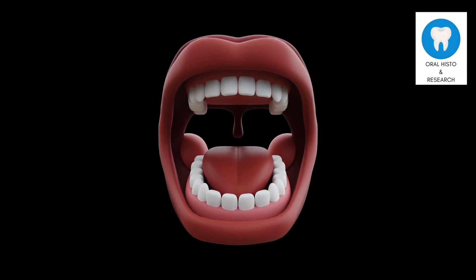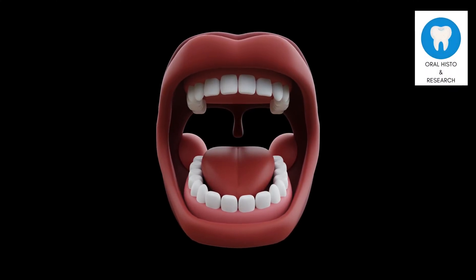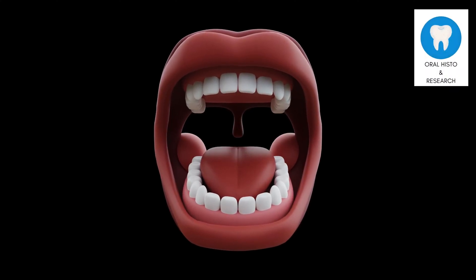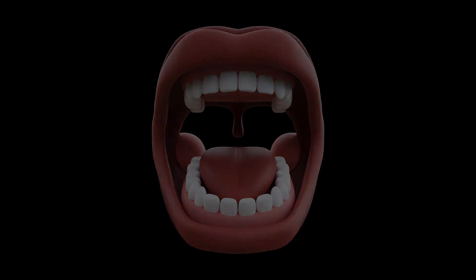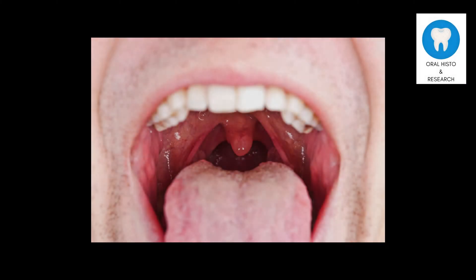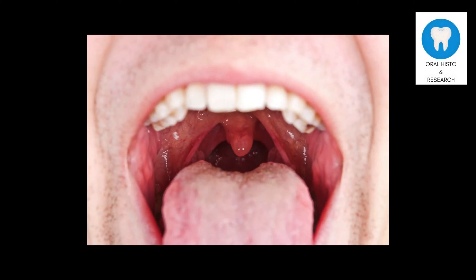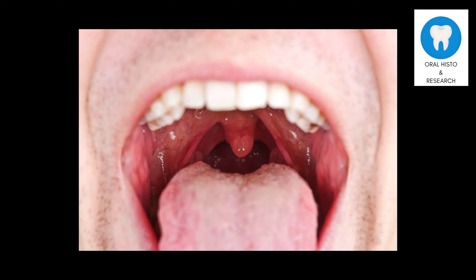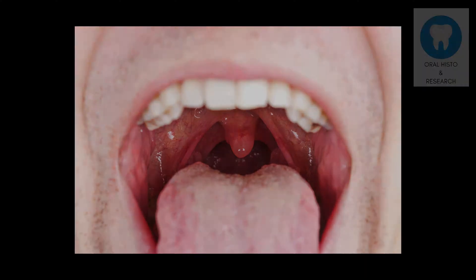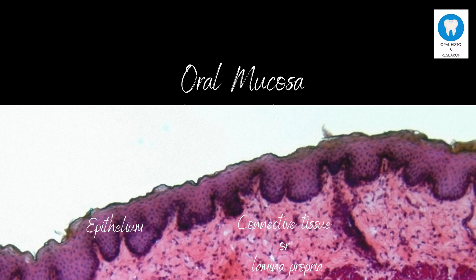Every area of the body interacting with the outside environment is coated with mucous membranes, which are wet linings. This membrane in the mouth is known as the oral mucosa. The oral mucosa comprises two layers: an exterior layer of epithelium and an underlying layer of connective tissue.